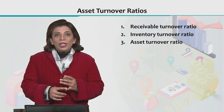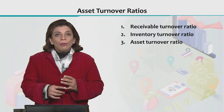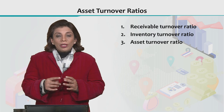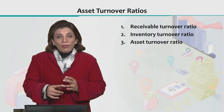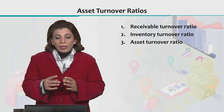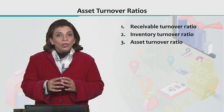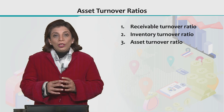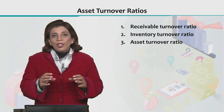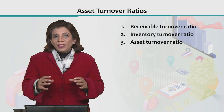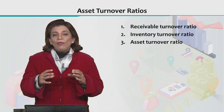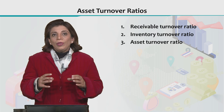The first one is the receivable turnover ratio. The second is inventory turnover ratio. And the third is the asset turnover ratio. These three ratios provide different perspectives on the efficiency of a firm.